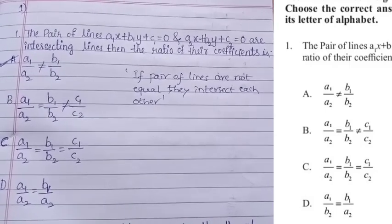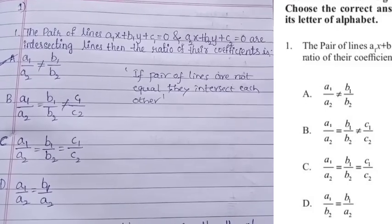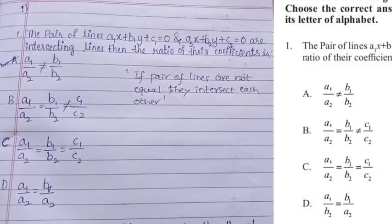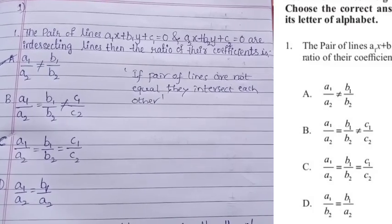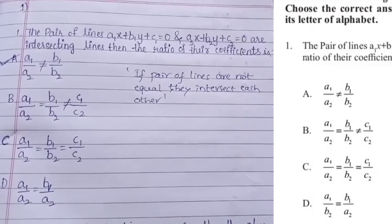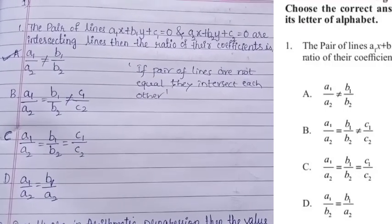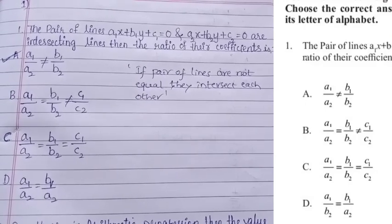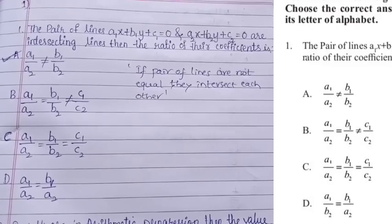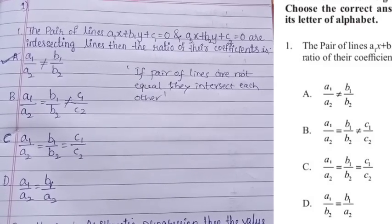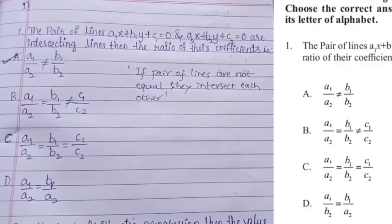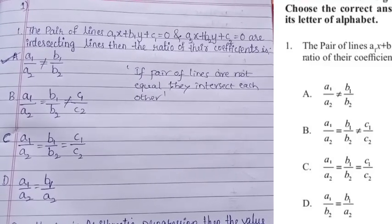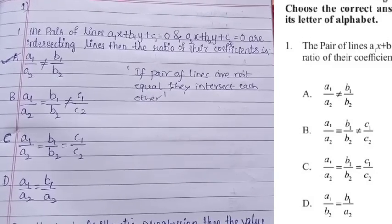The pair of lines A1x + B1y + C1 = 0, A2x + B2y + C2 = 0 are intersecting lines. Then the ratio of their coefficients is — they have given 4 options: A1/A2 ≠ B1/B2; A1/A2 = B1/B2 ≠ C1/C2, and so on. The correct answer is A: A1/A2 ≠ B1/B2. If the pair of lines are not equal, they intersect each other.